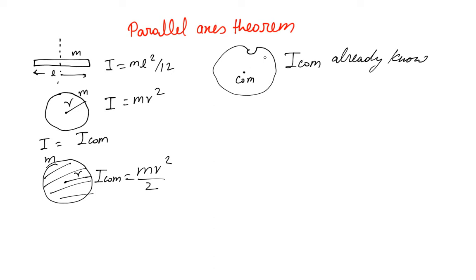Then I about any other axis which is at a distance r from the original axis is given as I_com plus mr². This is the I of the new axis about the new axis.